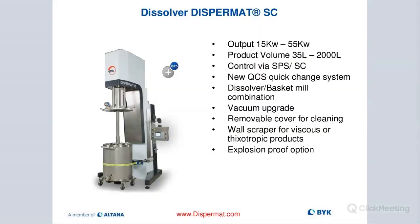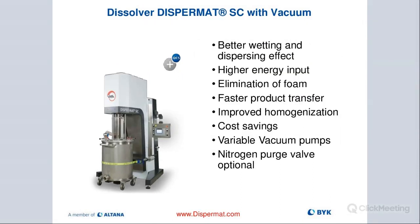We have the Dispermat SC for production, up to 2,000 liters of product volume. We also have the quick-change system for production — you have one machine that can act as a disperser, dissolver, or mixer, and you can also convert it into a basket mill with that quick-change system. We offer vacuum capability for manufacturing — some people also use it for lab space.